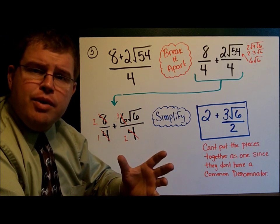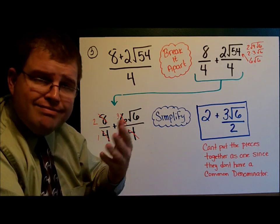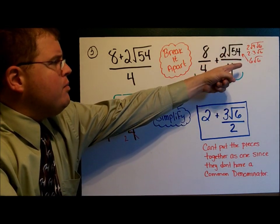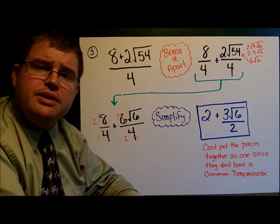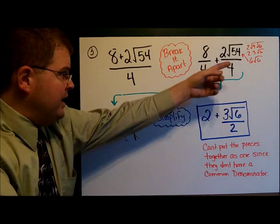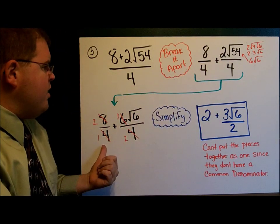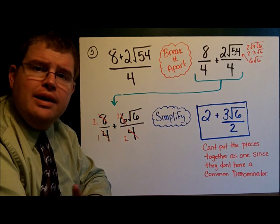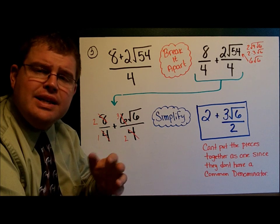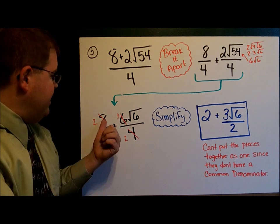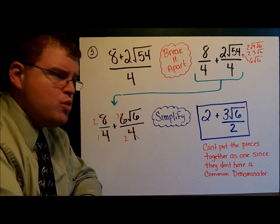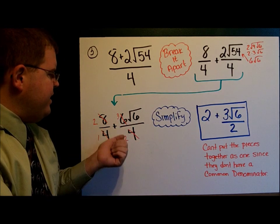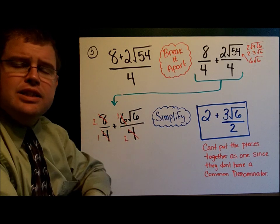And now that I've broken it apart, what do I do? Yep, I simplify the square root. 2 square roots of 54 becomes 6 square roots of 6. Now that I have this, I have 8 over 4 plus 6 square roots of 6 over 4. And now finally, the last thing I'll do is I'll simplify each fraction. 8 over 4 becomes 2. 6 square roots of 6 over 4 becomes 3 square roots of 6 over 2.